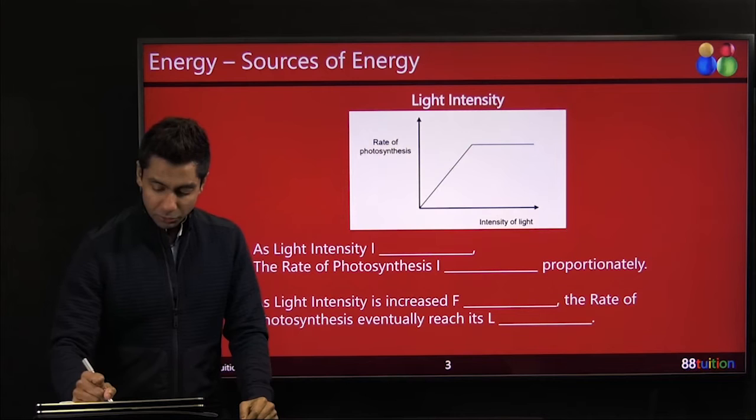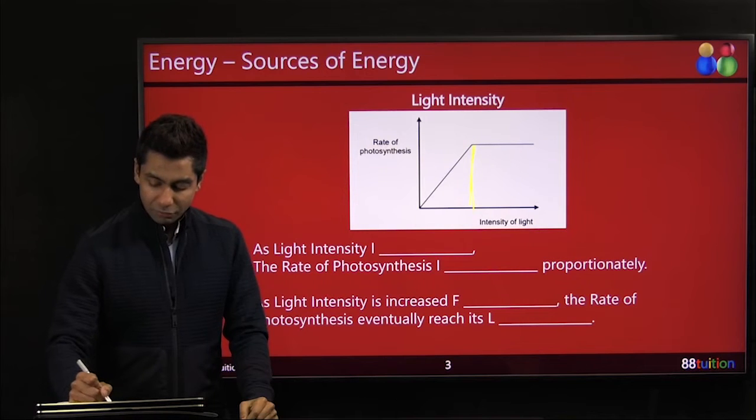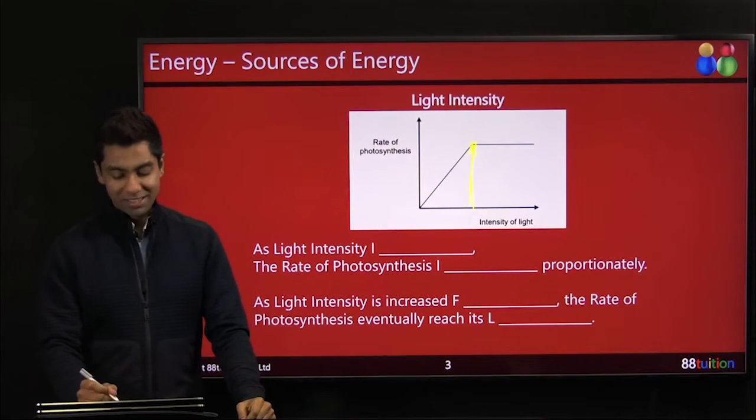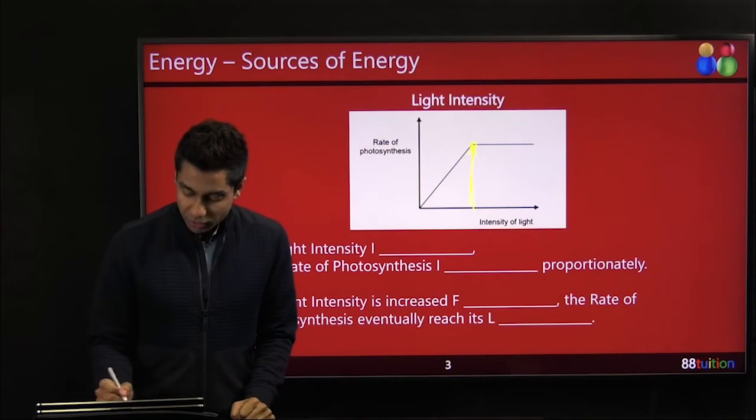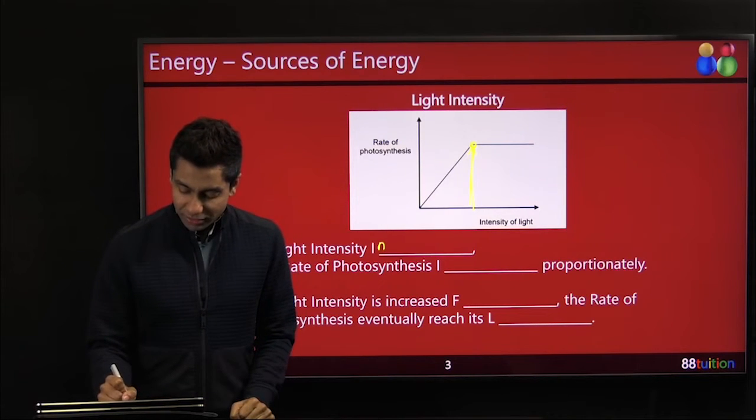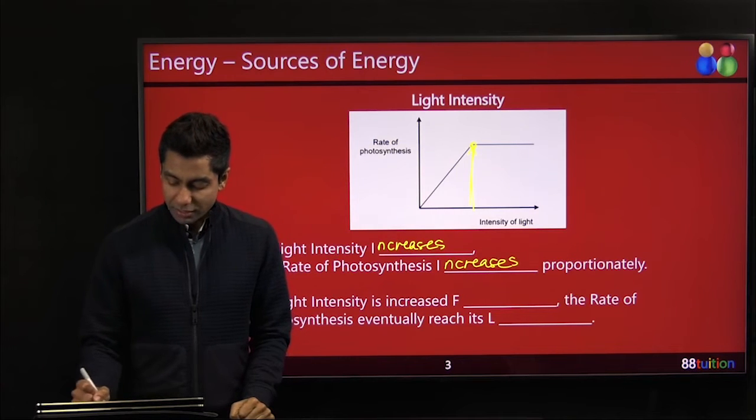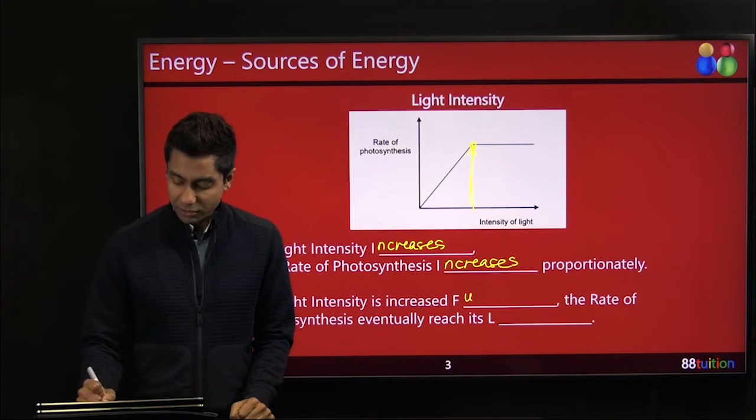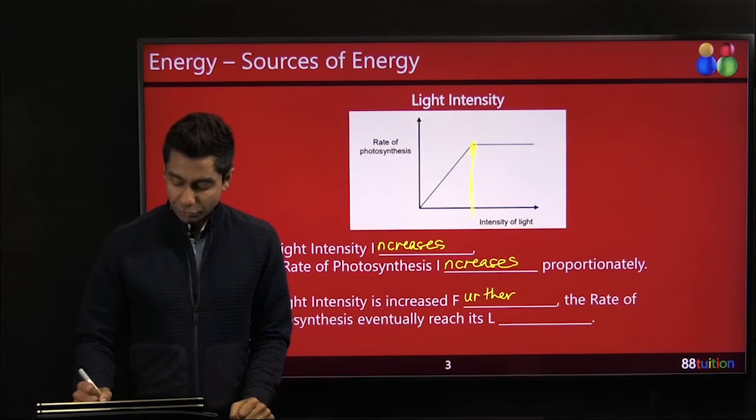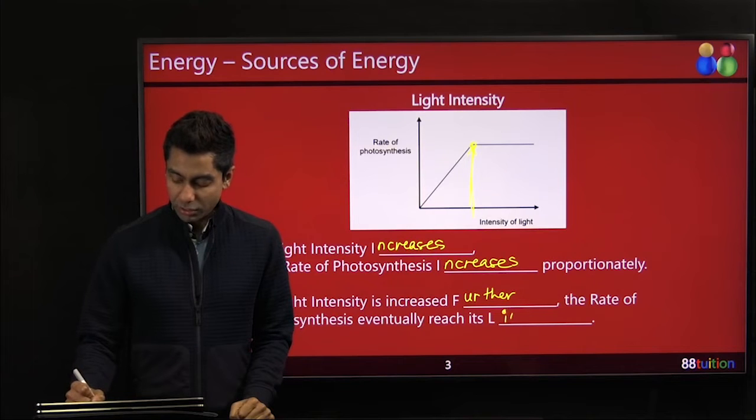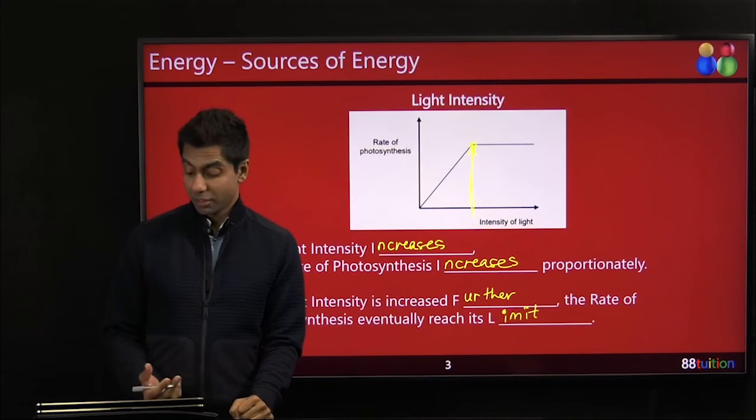So the plant says, I've done my best. That's the fastest I can make food. So this is the end. After that, even though you are producing light for him, he cannot go further than that. Maxed out. So in words, let's complete this quickly. As light intensity increases, the rate of photosynthesis increases too. But there is a limit. As light intensity is further increased further, further from this point, the rate of photosynthesis eventually reaches its limit. So I think you understand what limit is based on the fact or the example I gave you about running.